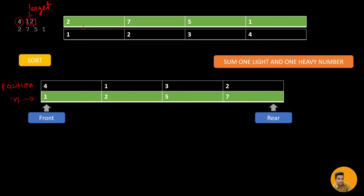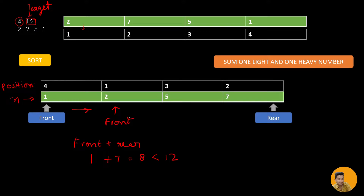The target value is 12. I sum front plus rear: front points at 1 and rear points at 7, so 1 plus 7 is 8, which is less than 12. So I should increase the front to include heavier numbers. Now front points at 2; 2 plus 7 is 9, still less than 12, so I increase front again. Now 5 plus 7 equals 12, which equals the target — we found it!